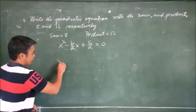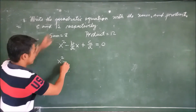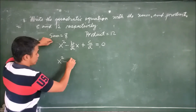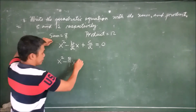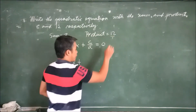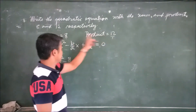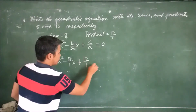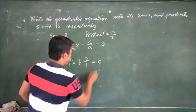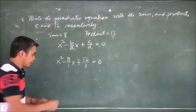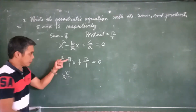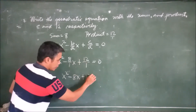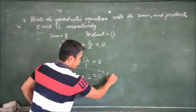Now let's substitute. x² minus 8 over 1 times x plus 12 over 1 equals 0. Note that it is understood that a equals 1, so the denominator is 1. Simplifying: 8 divided by 1 equals 8, and 12 divided by 1 equals 12. Therefore the answer is x² − 8x + 12 = 0.